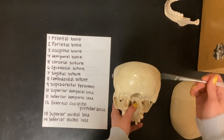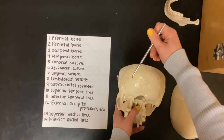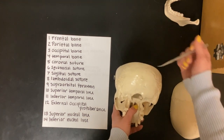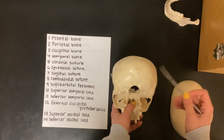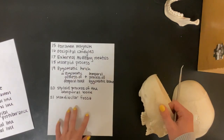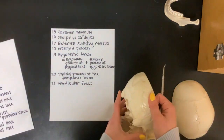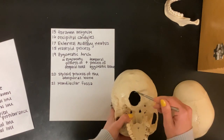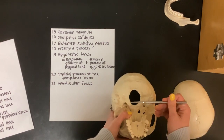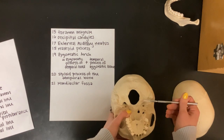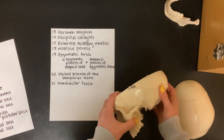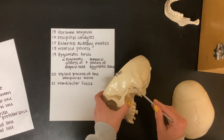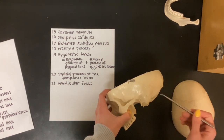Twelve is the external occipital protuberance. Thirteen will be the superior nuchal line. Fourteen, the inferior nuchal line. Fifteen, the foramen magnum. Sixteen, the occipital condyles. Seventeen, the external auditory meatus.